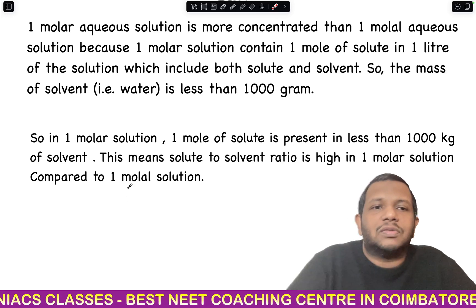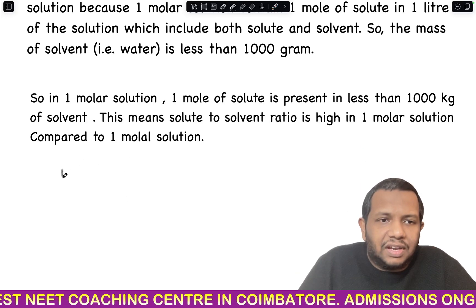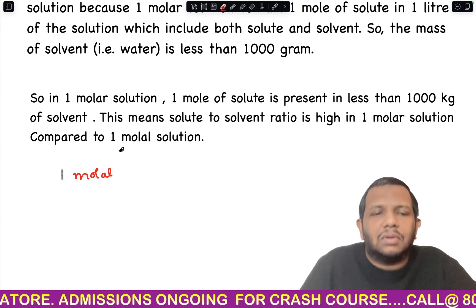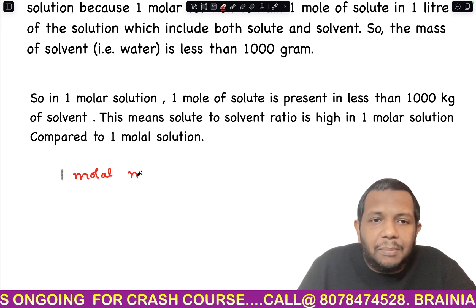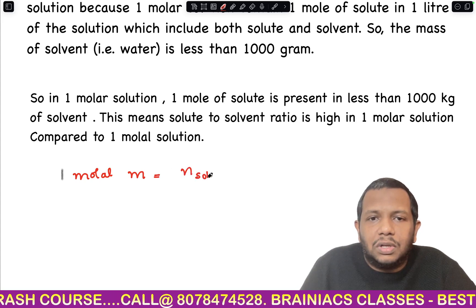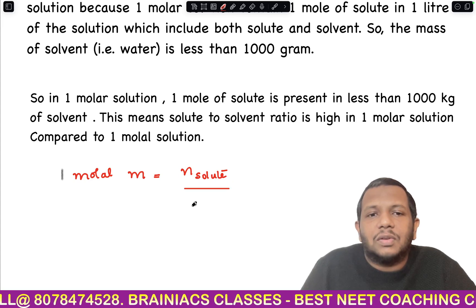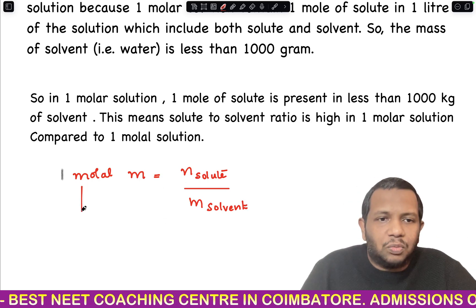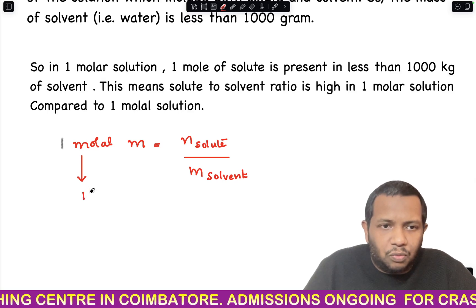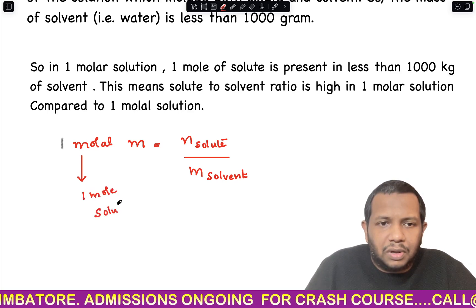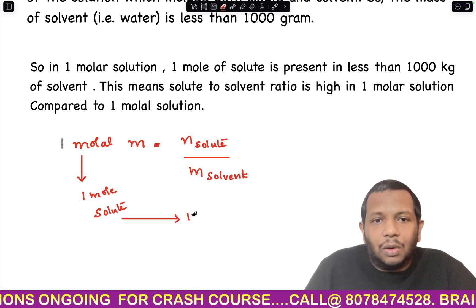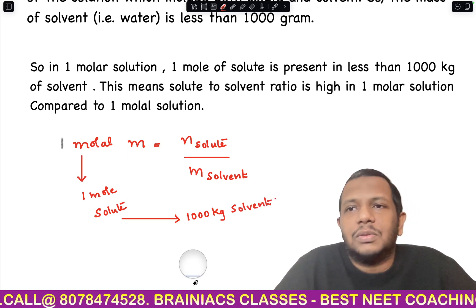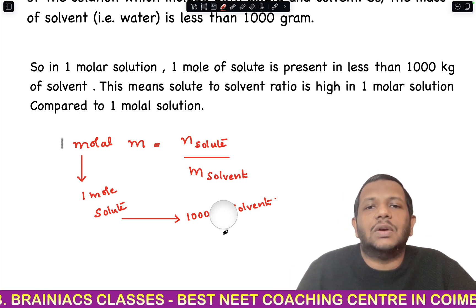In a 1 molal solution, molality m = moles of solute ÷ mass of solvent. A 1 molal solution means 1 mole of solute is present in 1000 grams of solvent. So the solvent mass is exactly 1000 grams.